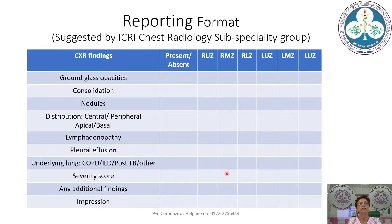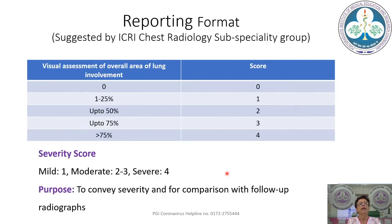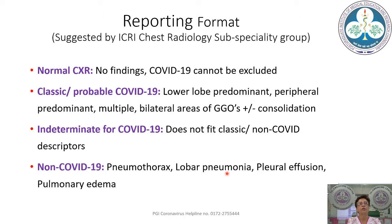A reporting format suggested by the ICRI chest radiology subgroup lists all findings as present or absent, notes the zones involved, and gives a severity score based on visual assessment of overall lung involvement: up to 25% involvement = score 1, more than 75% = score 4. A total score of 1 is classified as mild, 2–3 as moderate, and 4 as severe. The purpose is to convey severity of lung involvement to the clinician and to allow comparison with follow-up radiographs. A normal chest X-ray does not exclude COVID-19. Classic/probable COVID-19 shows lower-lobe and peripheral predominance with multiple bilateral areas of GGOs or consolidation. Indeterminate findings do not fit the classic pattern, and non-COVID findings include lobar pneumonia and pleural effusion.